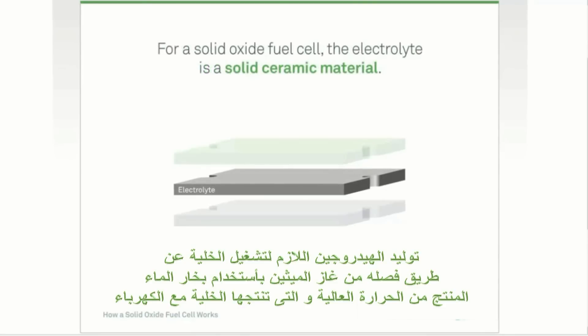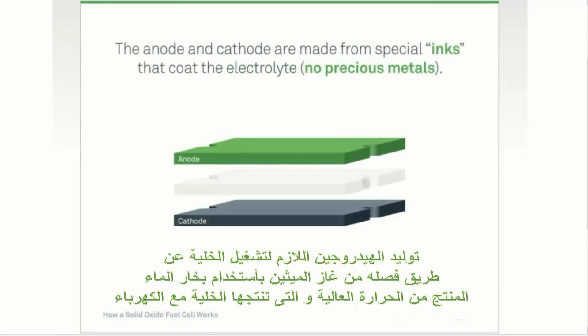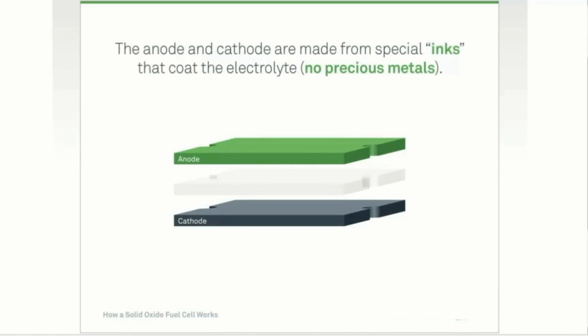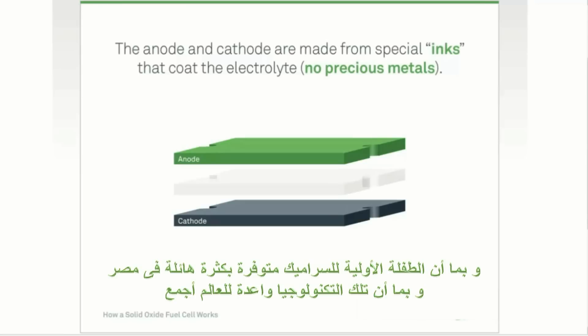For a solid oxide fuel cell, the electrolyte is a solid ceramic material. The anode and cathode are made from special inks that coat the electrolyte. Unlike other types of fuel cells, no precious metals, corrosive acids, or molten materials are required.